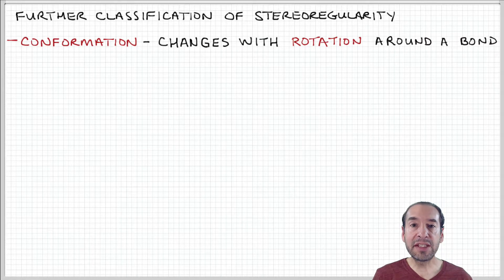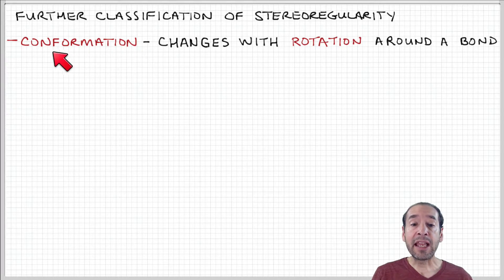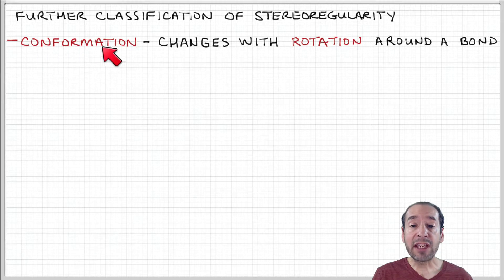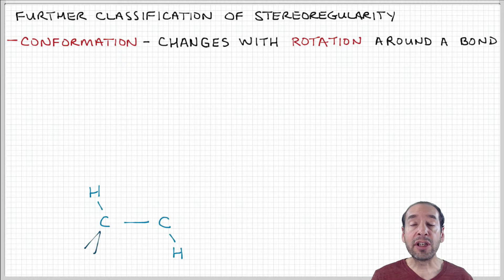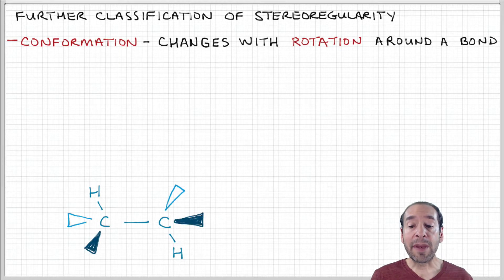In addition to tacticity, we can also describe how different chemical groups are positioned along a polymer backbone with respect to rotations around the backbone bonds. And one way that we can describe that is in terms of conformation. So this describes rotational arrangement about the backbone.